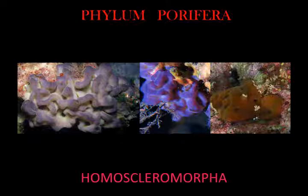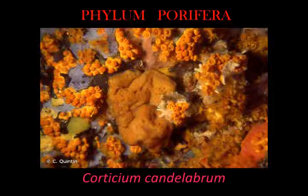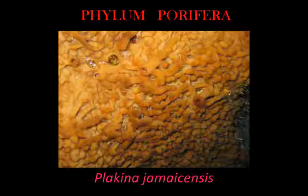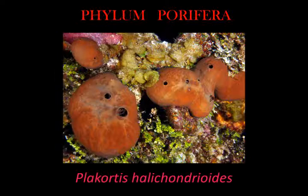Homoscleromorpha examples include Oscarella lobularis, Corticium candelabrum, Plakina jameensis, Plakortis simplex, Plakortis halichondrioides, and Oscarella carmela.